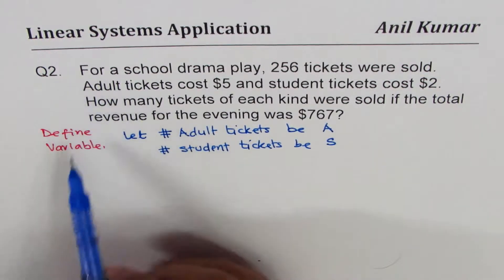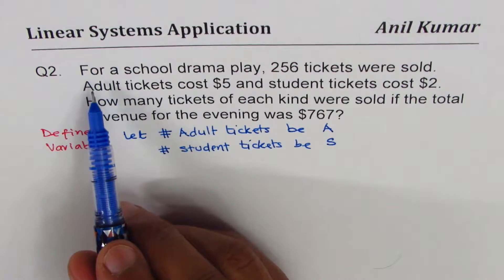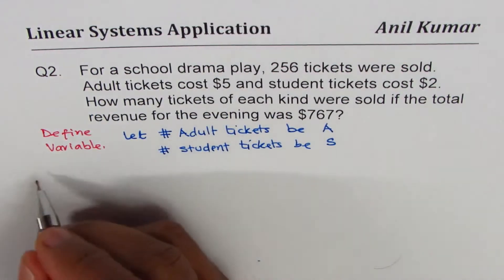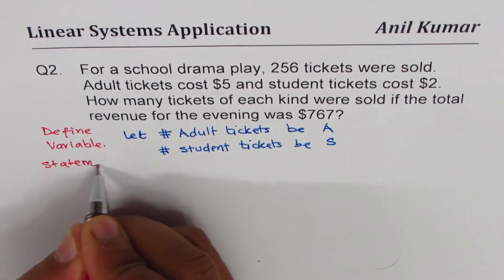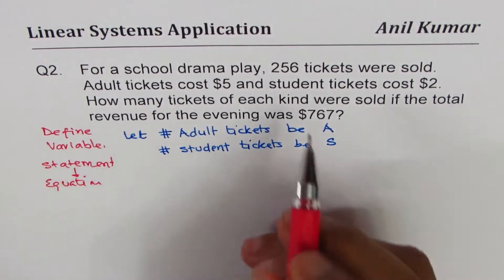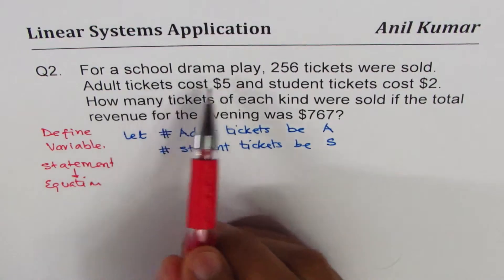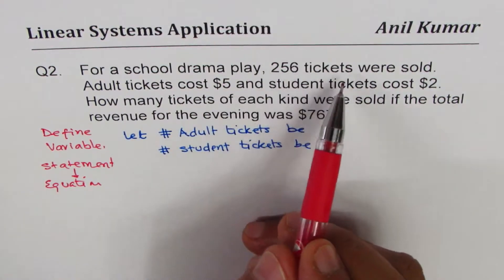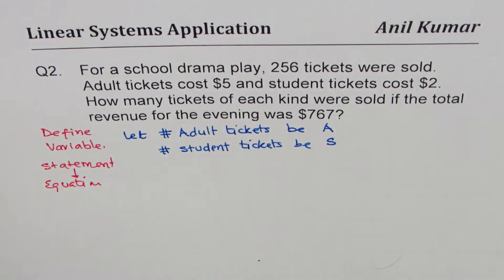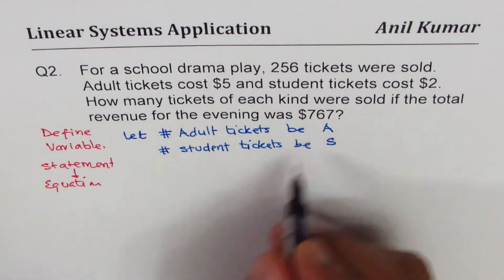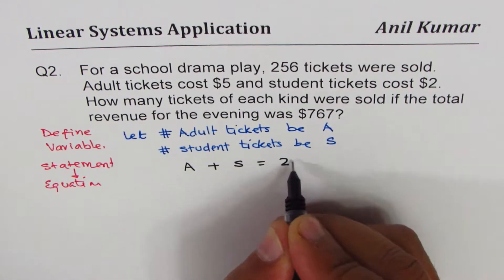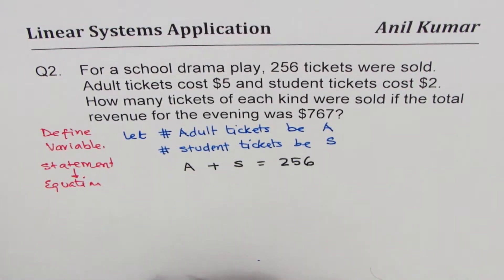After defining the variables, read your question again. For each statement, write down an equation — translate statement to equation. First statement: for a school drama play, 256 tickets were sold. That is the total number of tickets. So you write the equation: A plus S equals 256. That is the total number of tickets sold.